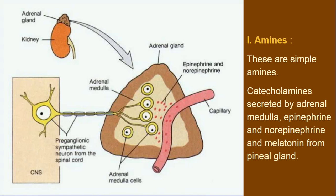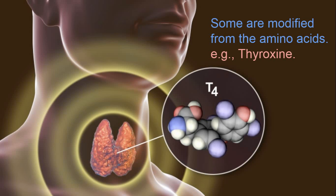Catecholamines are secreted by the adrenal medulla. Examples are epinephrine and norepinephrine, which come from the medulla region of the adrenal gland. Melatonin is secreted from the pineal gland. So if a question asks for examples of amine-type hormones, you should write epinephrine, norepinephrine, and melatonin.